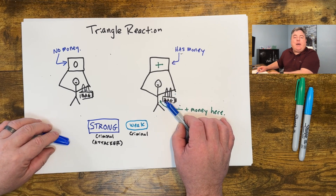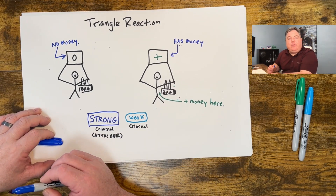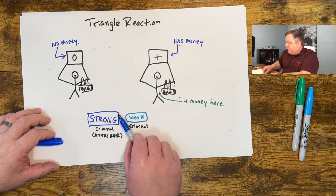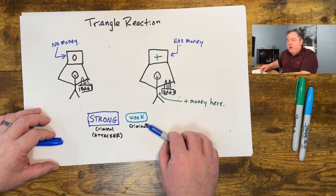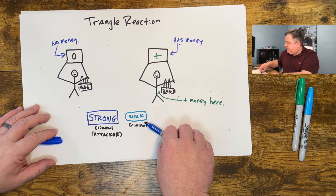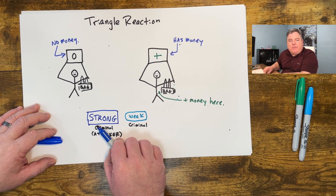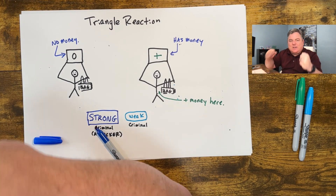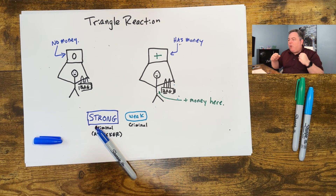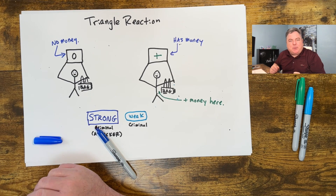We also have an attacker in this scenario. The attacker can be either strong and aggressive — I drew this big, strong, aggressive attacker — or it could be a weak, timid attacker. If the attacker is strong and aggressive, they just want to get their violence out. They walk up and they'll just punch somebody wherever they can — the easiest way to punch somebody.